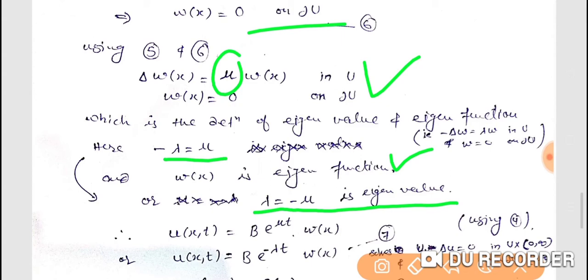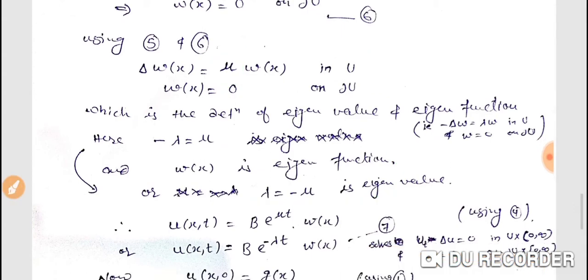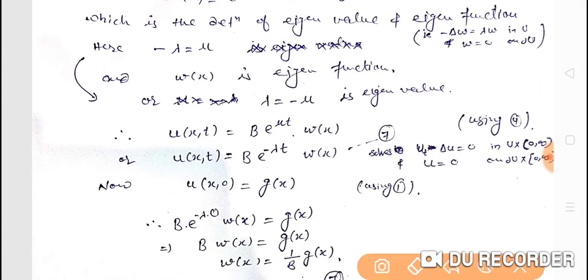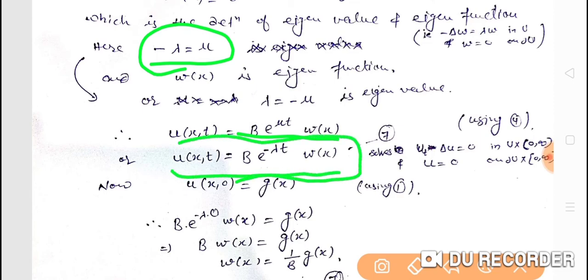Now let's look at u(x,t). We had u(x,t) equals b times e^(mu t) times w(x). But mu equals minus lambda, so substituting, u(x,t) equals b times e^(-lambda t) times w(x). This is our solution form. Now we need to find the value of w.